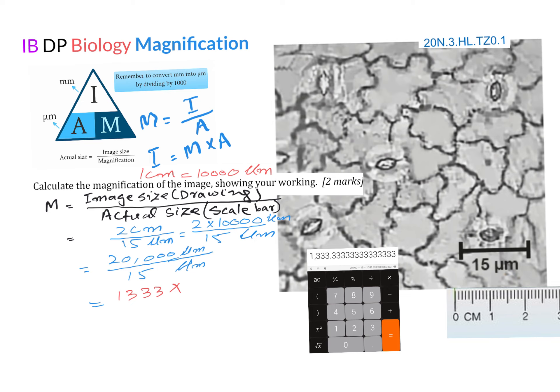Magnification is equal to image size divided by actual size. The image size is the drawing or the image on the paper, and the actual size might be given in the question or may be given in the form of a scale bar.